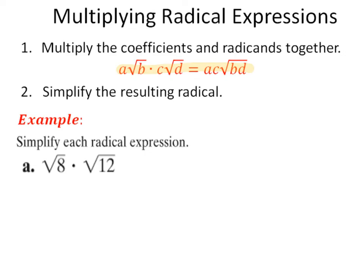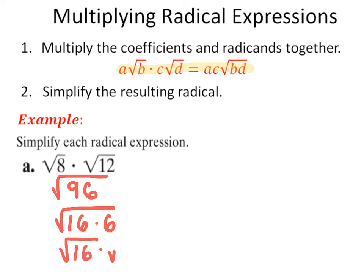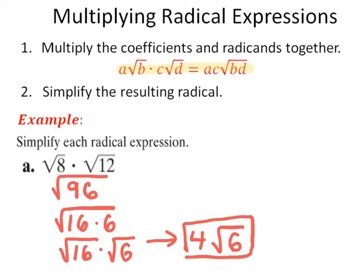In my first example, I multiply 8 times 12, which gives me the square root of 96. Now I have to simplify that. The largest perfect square that divides into 96 is 16. So it's the square root of 16 times 6, which becomes the square root of 16 times the square root of 6. Simplifying gives a final answer of 4 square root of 6. At this point, if you don't need to rewrite all the steps for simplifying, that's okay, but if it helps you, continue to include it.